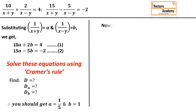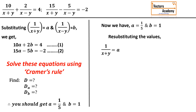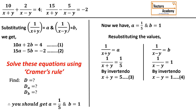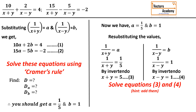Resubstituting, 1/(x plus y) equal to 1/5, and taking invertendo gives x plus y equal to 5. Resubstituting b, 1/(x minus y) equal to 1, and taking invertendo gives x minus y equal to 1. This time I get two new equations in terms of x and y. I need to solve them again using any method. After solving, the values of x and y should come out to 3 and 2.